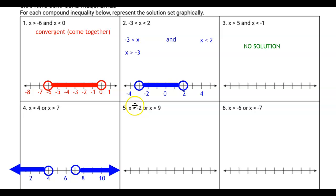Moving on to number five, x is less than negative two, or x is greater than nine. They're going to go apart, and it's okay that they're going apart. Pause the video and try it out, and come back to see if you got it right.